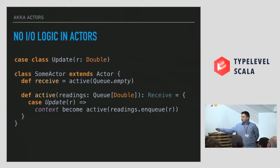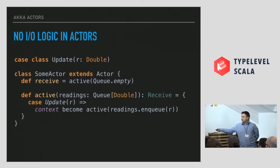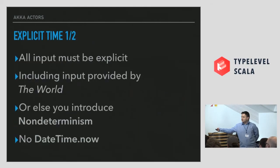It's a pretty bad idea to place IO logic in actors. IO logic should be outside of actors because actors are hard to test. Actors should be used for aggregating and inferring state, but IO logic should be placed outside. Whatever readings you're doing should be pushed as messages to the actor. Actors should stay minimal.